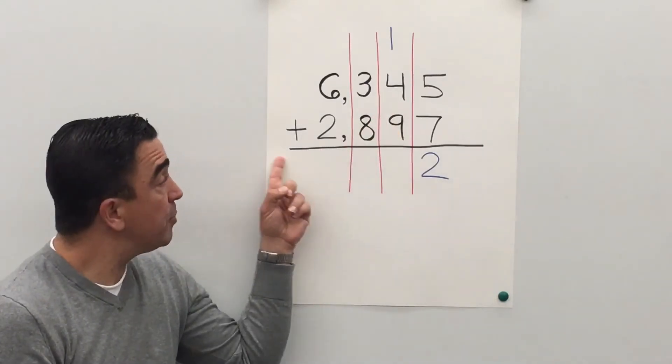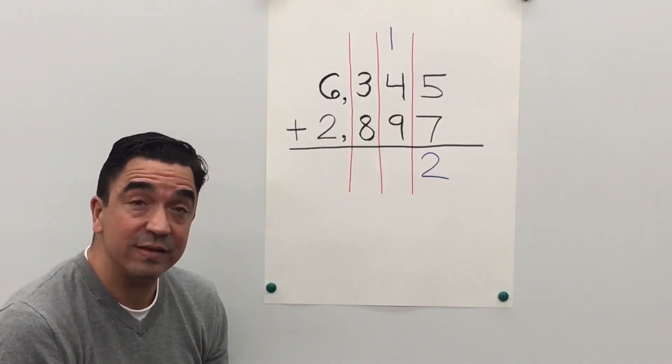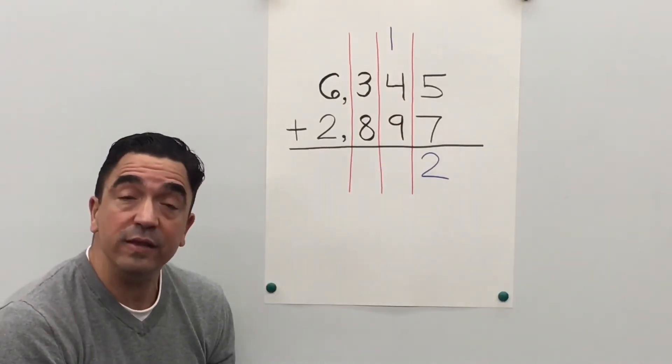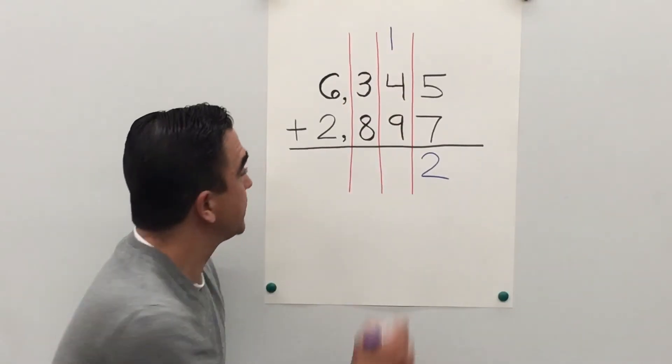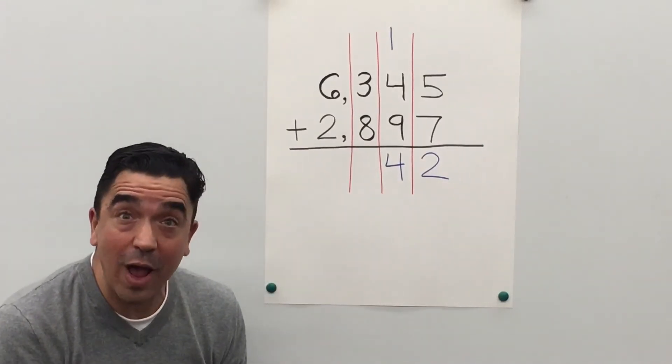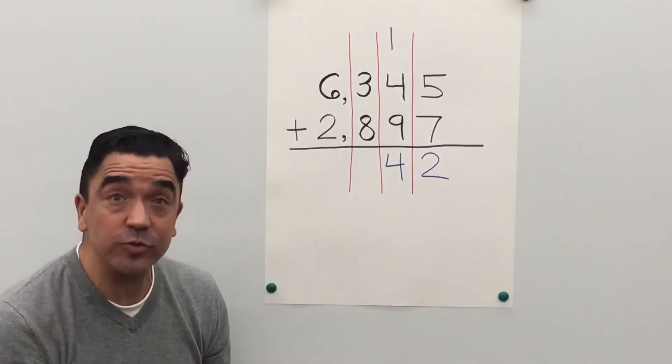4 plus 9 is 13, plus 1 is 14. Regroup the one into the hundreds place.